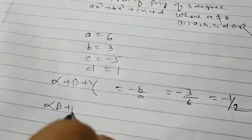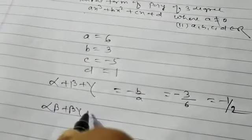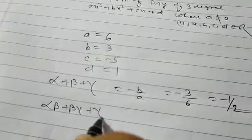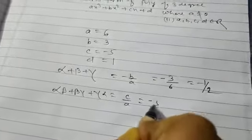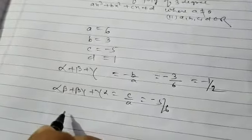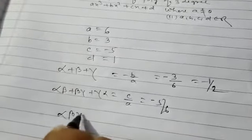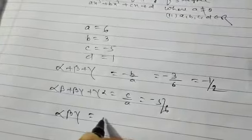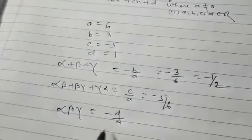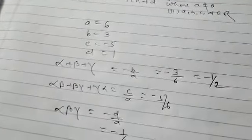And alpha beta plus beta gamma plus gamma alpha is equal to c by a. And that is minus five by six. And alpha beta gamma is equal to minus d by a. And this will be minus one by six.